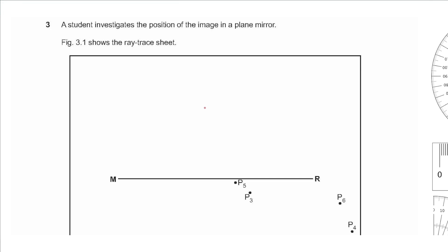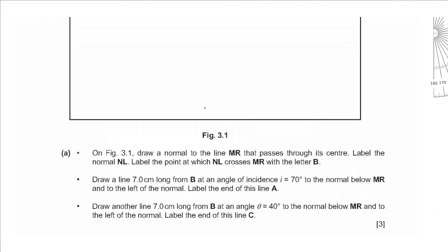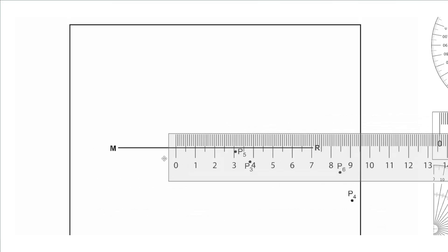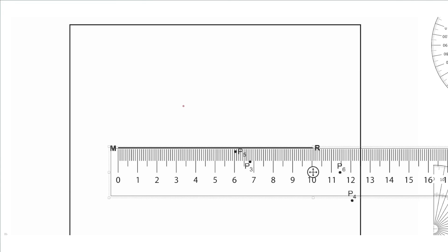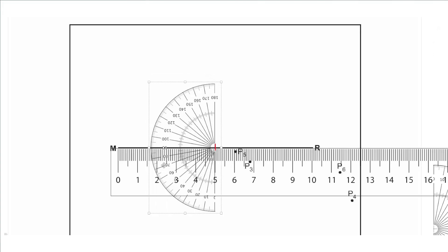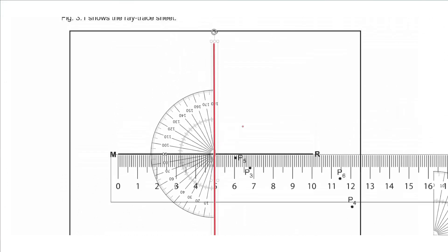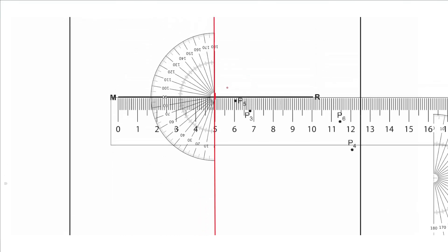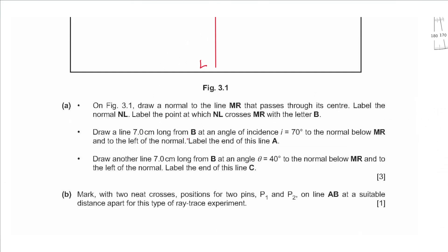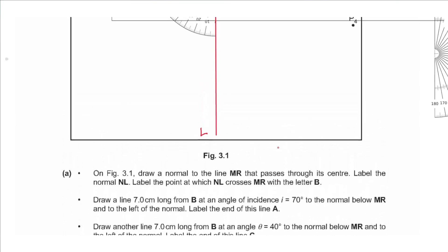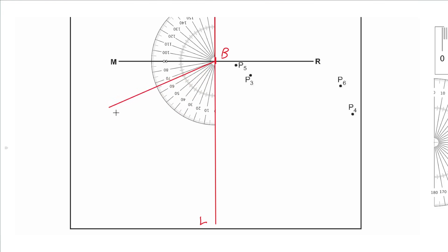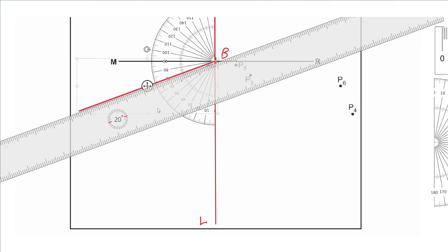Question 3: a student investigates image position in a plane mirror. Part a asks us to draw a normal to line MR through its center, labeled NL, with intersection point labeled B. We measure MR (approximately 10 cm), find the midpoint at 5 cm, then use a protractor to draw a 90° line through that point and extend it, labeling it NL with intersection B. Next, from B we draw a line 7 cm long at 70° to the normal (below MR, to the left) and label its end A.